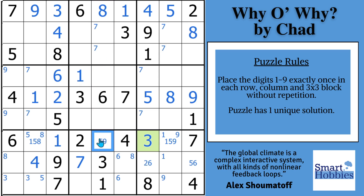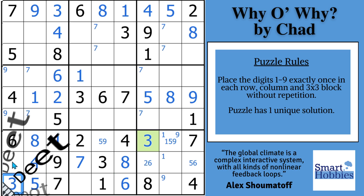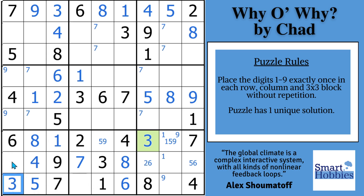This speeds up our solving so much using Snyder notation. With this eight we displace the Snyder mark right there and solve this cell for eight, displacing our Snyder six, which displaces this eight. And we can solve this cell for eight, displacing our Snyder five, then displacing our Snyder three. Awesome — and that's our three in the corner.